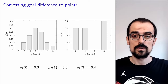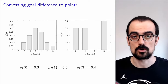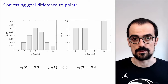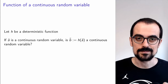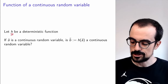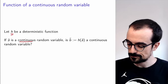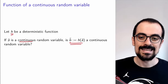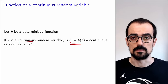We will see how we can do something similar, although it will get a little bit more complicated, for continuous random variables. But before that, we have to ask ourselves: if we have a deterministic function h and we apply it to a continuous random variable to obtain another random variable B, is this a valid continuous random variable?